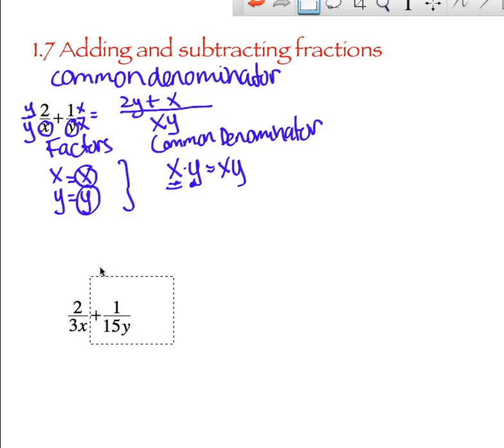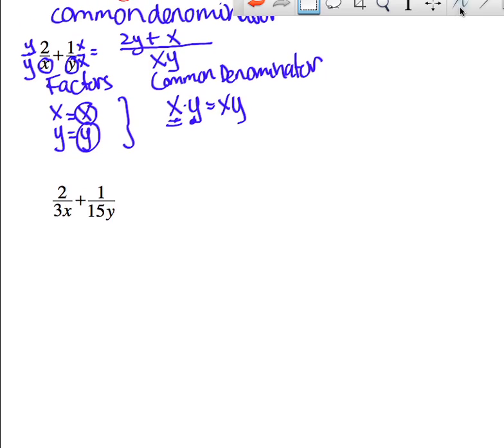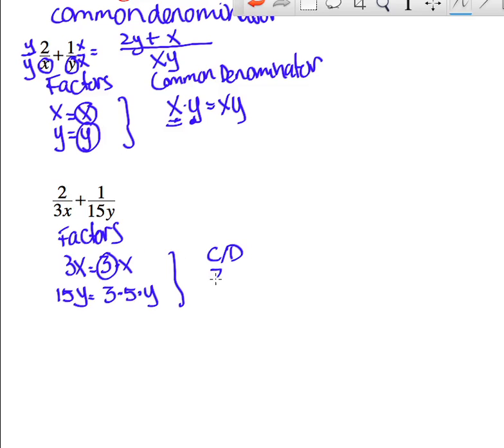So that was a fairly straightforward example, so let's look at one where I made it a little bit more difficult. We do the same things. I'm going to list the factors for both of the denominators. So 3x has as its factors a 3 and an x. 15y has as its factors a 3, a 5, and a y. So let's make a common denominator. I need one 3, I need one x. You need one 3, you already have that. You need one 5, you still need a 5. You need one y. So all of the factors are now represented in the common denominator. You multiply it out: 3 times 5 is 15, and then x times y. So your common denominator for this one is going to be 15xy.